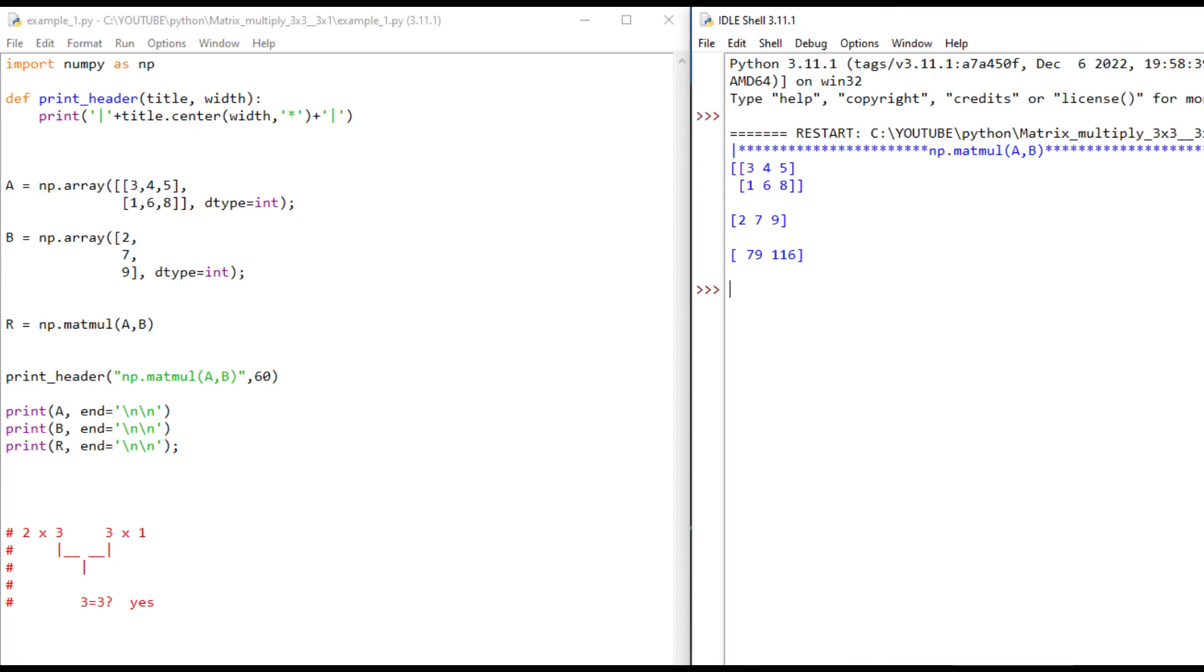Notice on R, we're saying R equals np.matmul, matrix multiply A comma B. In our output, notice that we got 79 and 116. That's the same answers we got by hand. Congratulations.